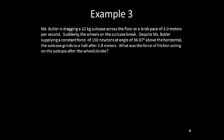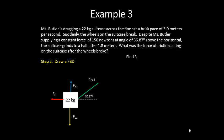Let's do one more example. Ms. Butler is dragging a 22 kilogram suitcase across the floor at a brisk pace of 3.0 meters per second. Suddenly, the wheels on the suitcase break. Despite Ms. Butler supplying a constant force of 150 newtons at an angle of 36.87 degrees above the horizontal, the suitcase grinds to a halt after 1.8 meters. What was the force of friction acting on the suitcase after the wheels broke? Again, our first step, write down what you're trying to find. So we're trying to find the force of friction. We're going to draw our free body diagram.